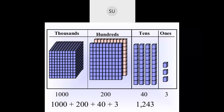Then what does the next number represent? We have 3 ones, 4 tens (which is 40), 2 hundreds (which is 200), and 1 thousand. So the number is 1000 plus 200 plus 40 plus 3, which is 1243.